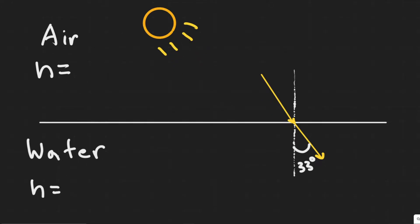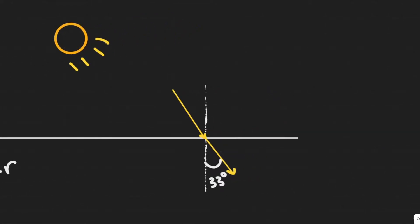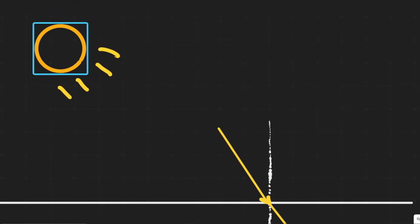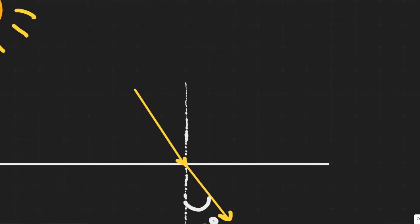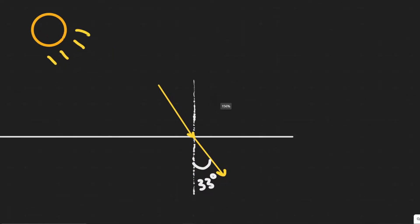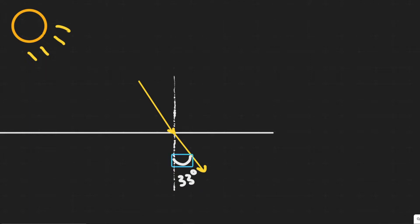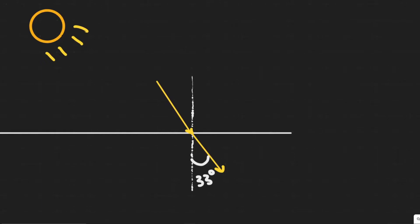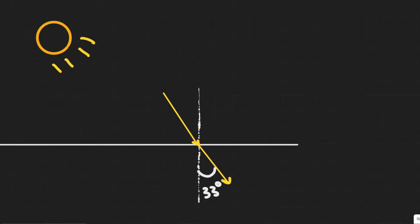The first thing you always want to do is draw what's going on. We can imagine the sun is right here, emitting this light, and the light is going to travel and enter the water. The angle that the beam of light makes underwater to the vertical is going to be 33 degrees. What we're trying to find is the angle above the horizontal that this beam of light is from the sun.